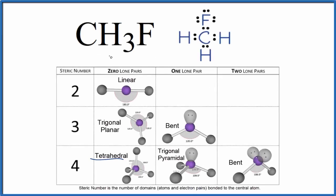We can figure out the molecular geometry for CH3F several ways. This is fluoromethane. The first way is we could look at the steric number. How many things are attached to the central carbon here?